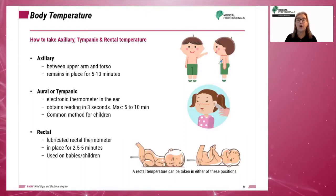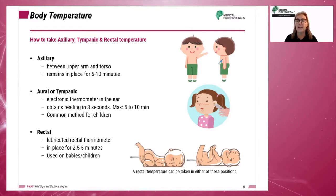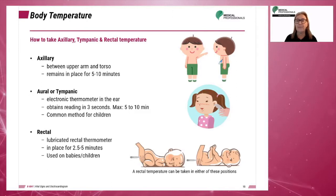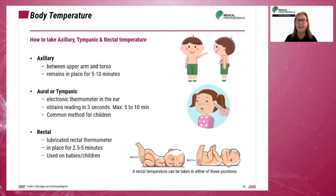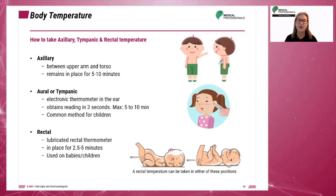Axillary temperature is placed between the upper arm and the torso. The thermometer should remain in place for 5 to 10 minutes. Tympanic measurement places an electronic thermometer in the ear. An accurate reading can be obtained in as little as 3 seconds, and this method is commonly used when taking the temperature of children.